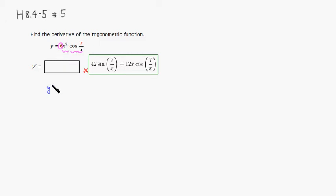So y prime is equal to - I'm going to leave 6 outside. The derivative of the first guy is 2x times the second guy, cosine of 7 over x.